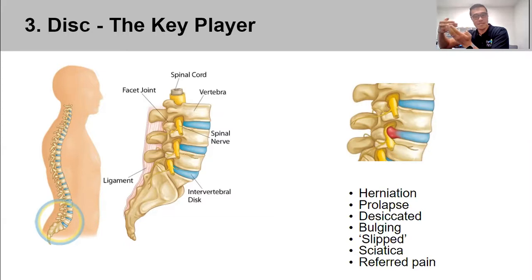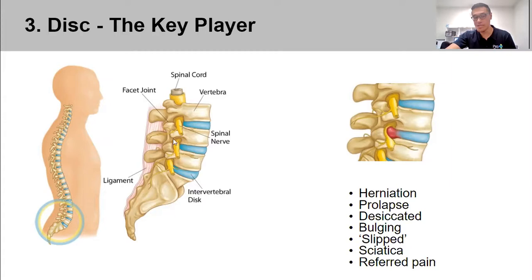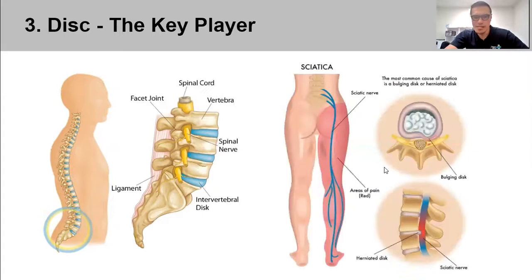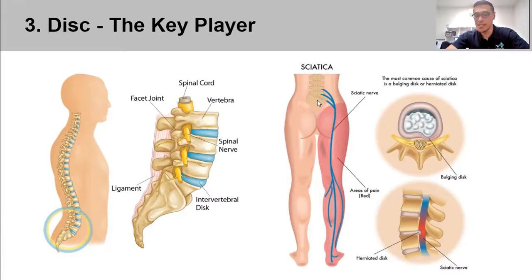Once the fibrous wall weakens enough, the disc bulges into the space behind it where the nerve runs, impinging on that nerve. The nerve then starts sending abnormal information. At each level of the spine, different nerves supply different parts of the body — this is referred pain, where an issue centrally is referred peripherally away from the spine and into the limb.